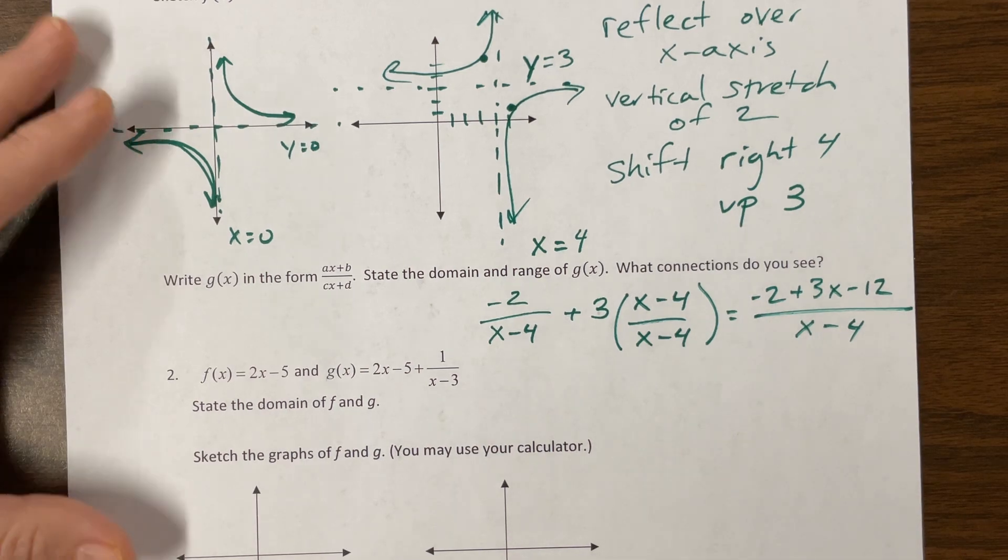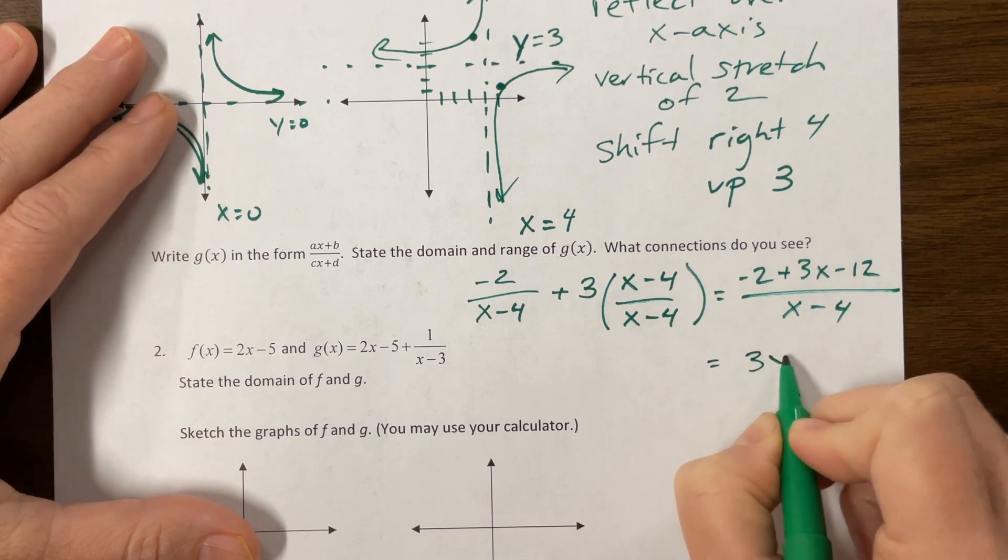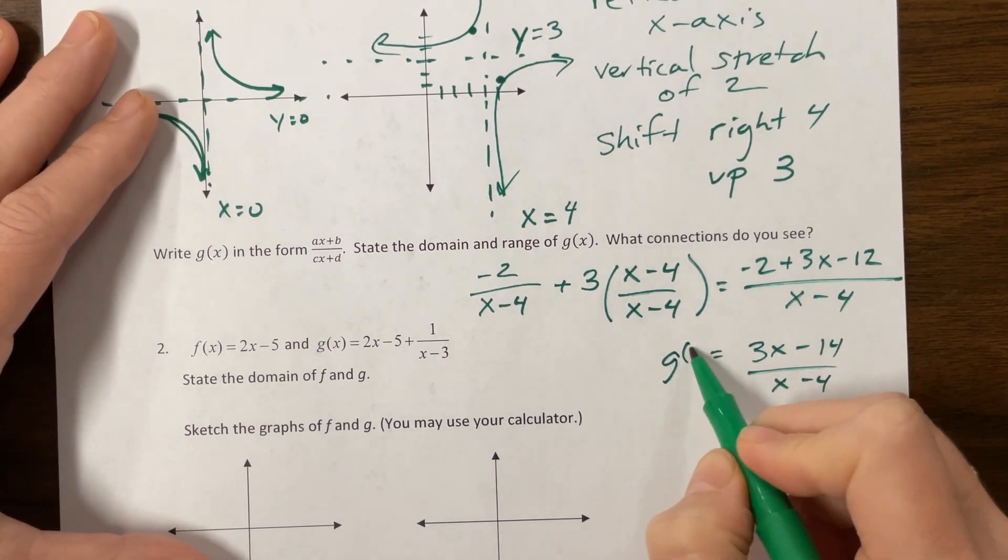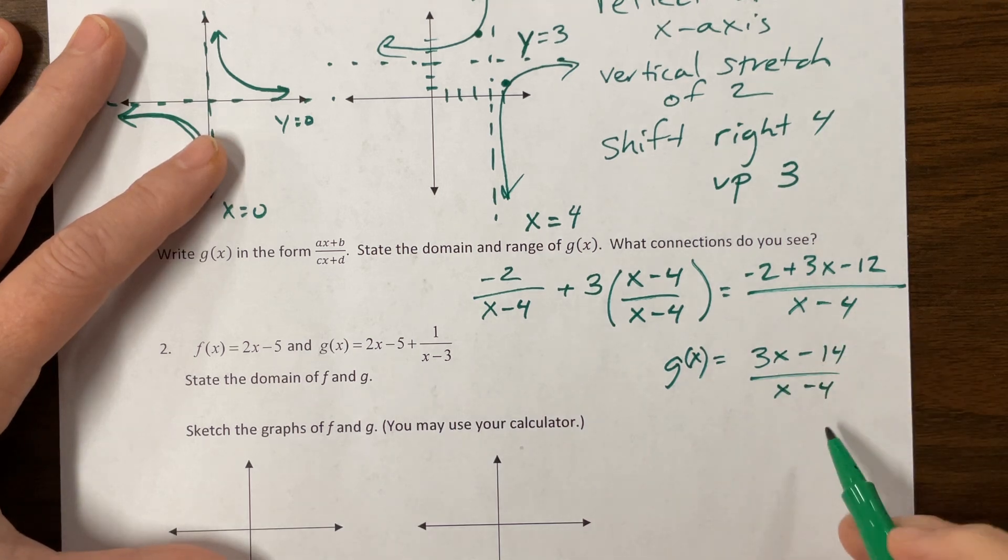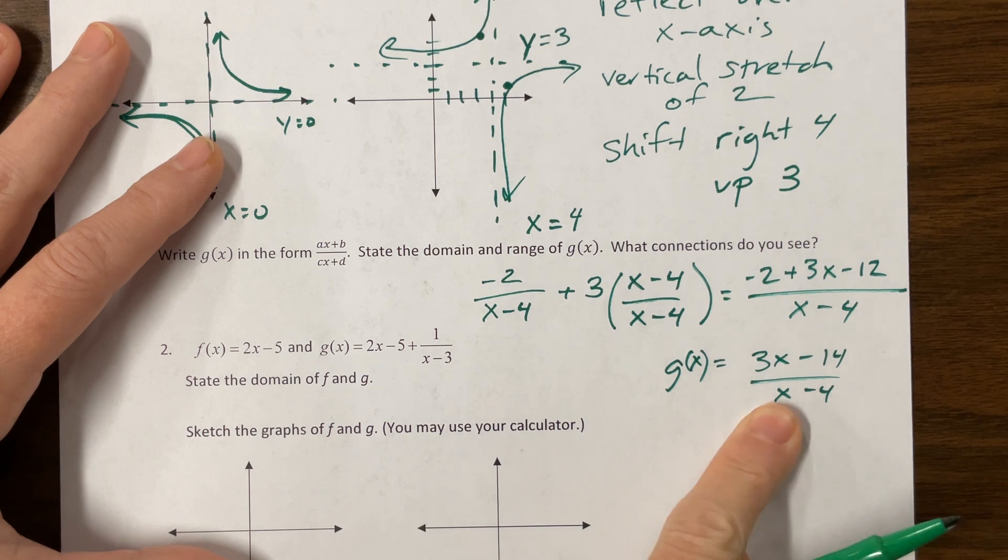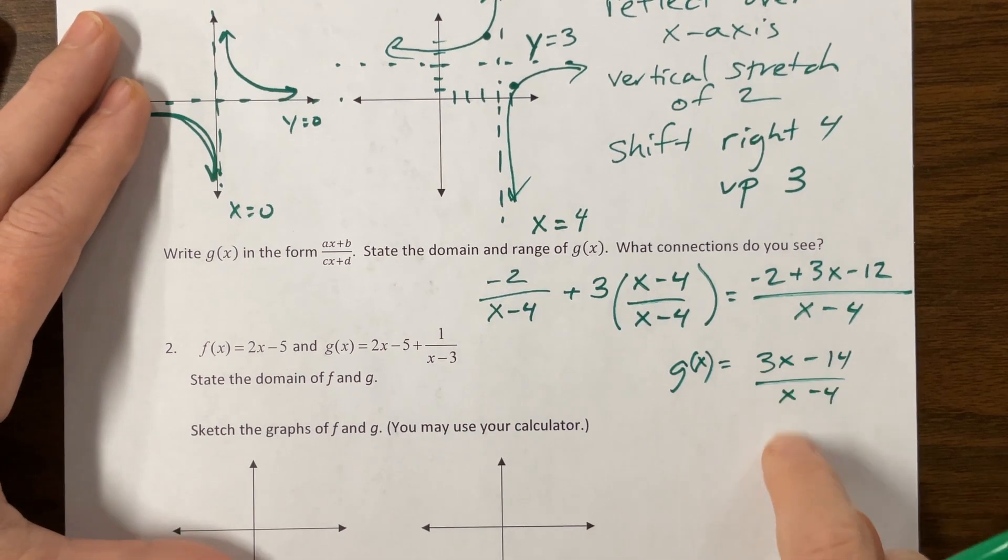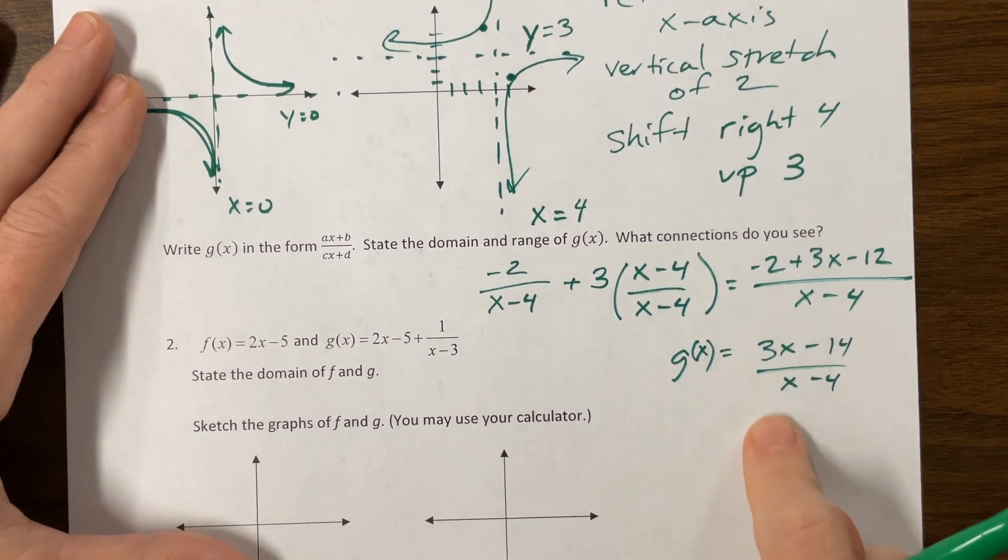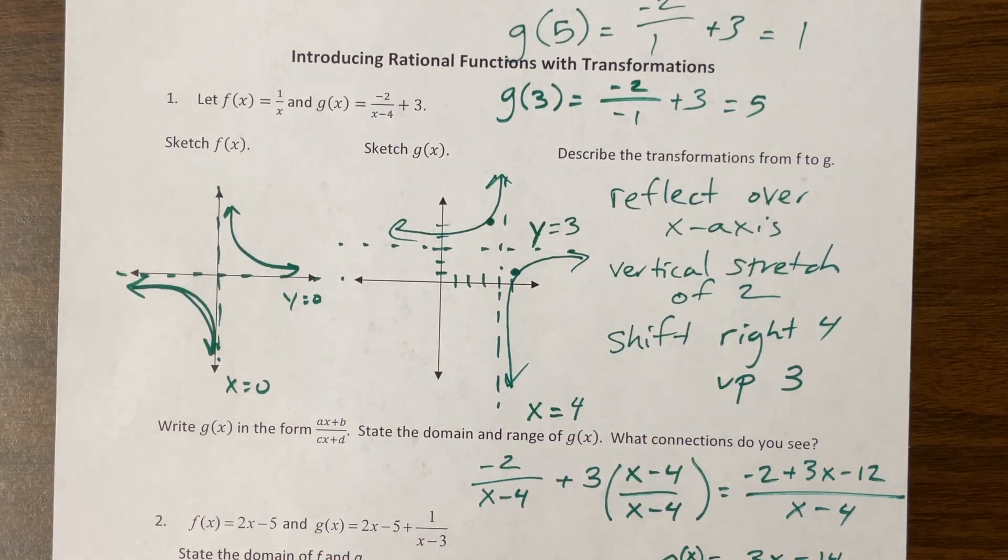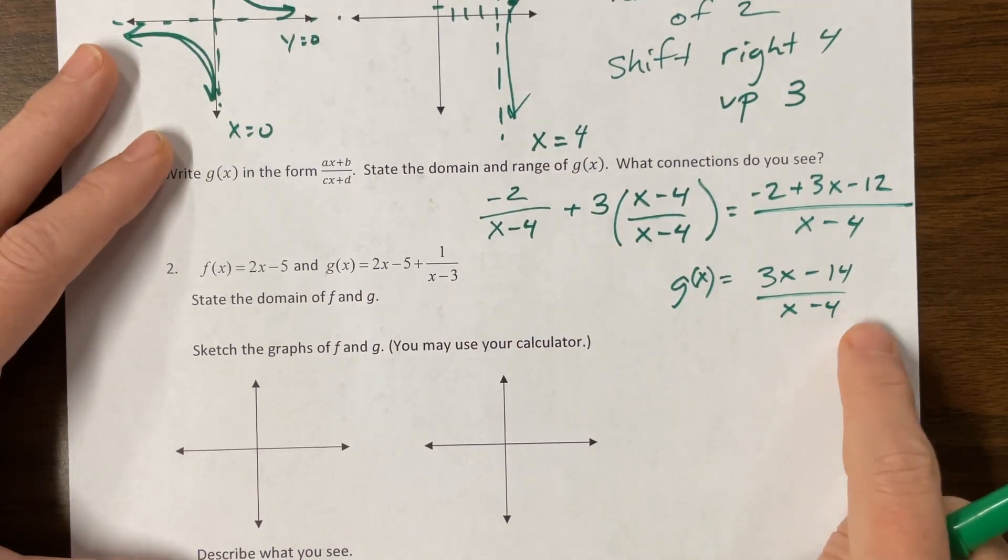So that now we can write this as 3x minus 14 over x minus 4. What you might remember from algebra 2 is that we would find our vertical asymptote by looking at the denominator. So x cannot equal 4 because you're not Chuck Norris and you can't divide by 0. x equals 4 was our asymptote. And then when we have the same degree we divide our leading coefficients so I'd have a horizontal asymptote of y equals 3 which I graphed here. So I think this is kind of a cool way to connect transformations to the parent function to polynomials written in this form.